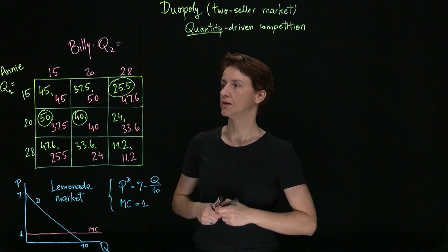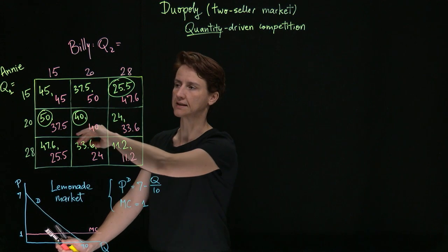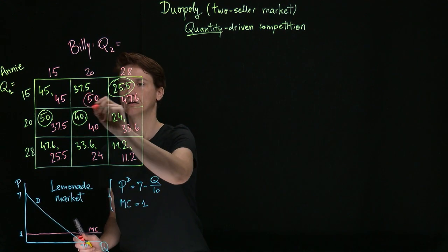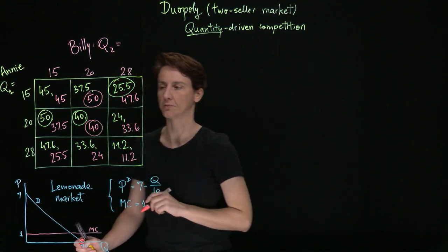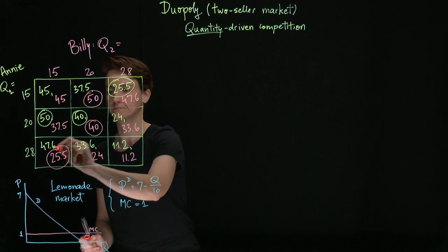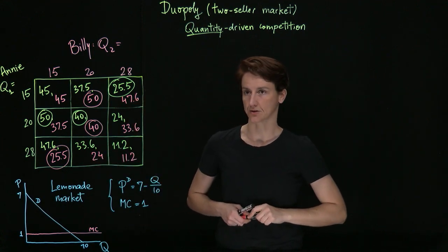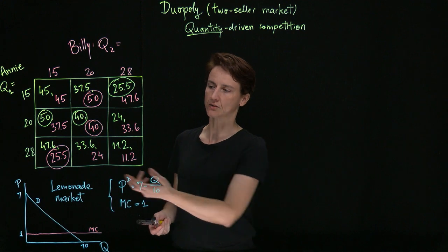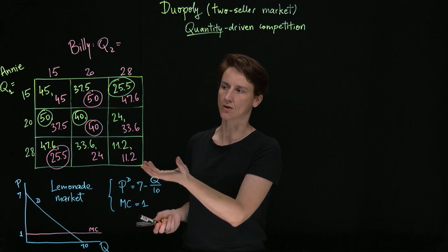What about Billy? For Billy, we're going to look within each row. So if Annie makes 15 glasses, he's best off making 20. If she makes 20, he is also going to want to make 20. And if she makes 28, he will prefer to make 15. He also doesn't have a dominant strategy, but he does have a dominated strategy. If we had happened to pick slightly different amounts, then we might find that producing too little is dominated, so this isn't necessarily how things will always play out.